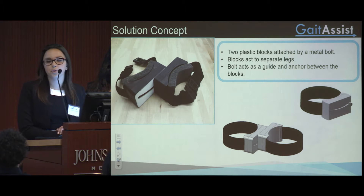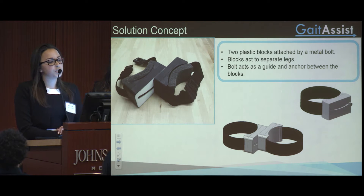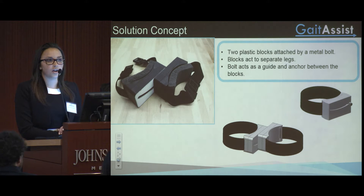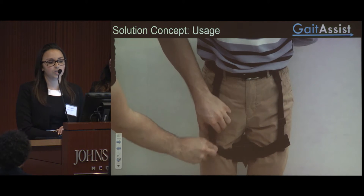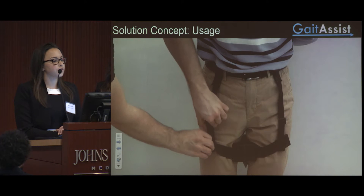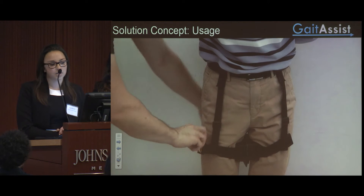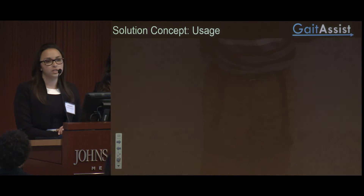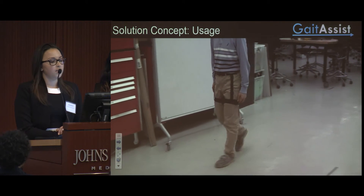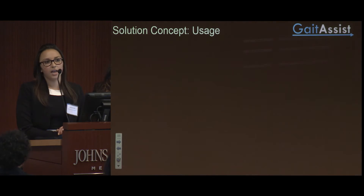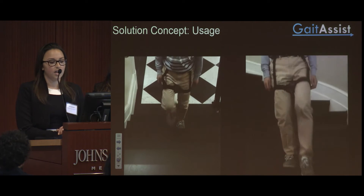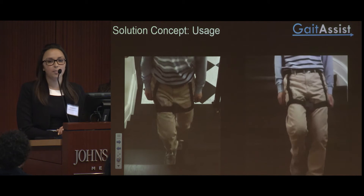Our solution is a simple orthosis which consists of two lightweight plastic blocks which are attached by a metallic bolt which slides along a C-shaped rail as the patient walks. The device is attached to the patient using elastic straps around the thighs, and is further secured using a suspension system which can be attached to the patient's belt. Both of these features are adjustable. The device moves easily with the patient throughout their gait cycle. It is lightweight and can be worn on uneven terrain, and it can be worn walking up and down stairs.